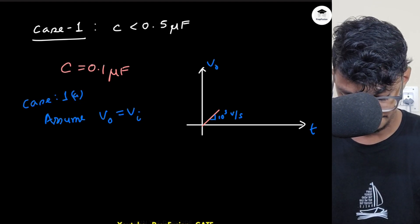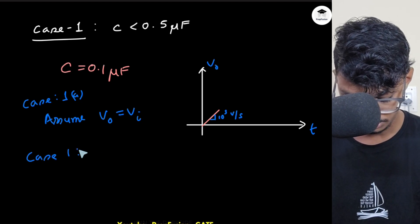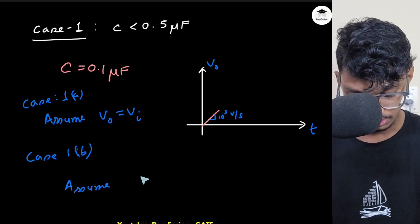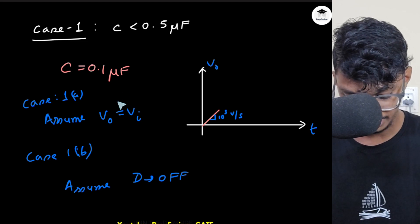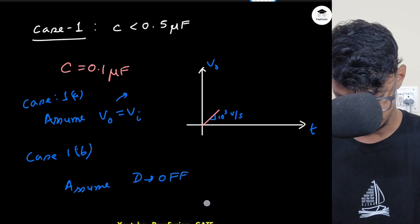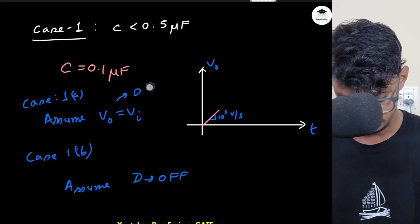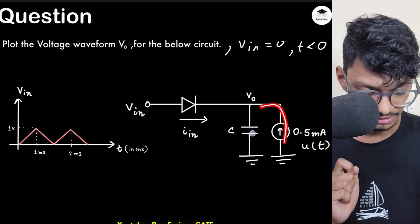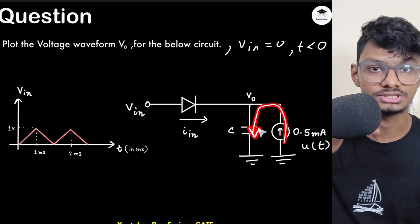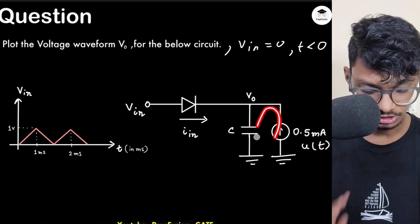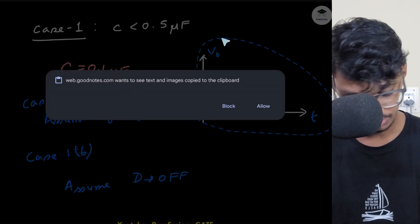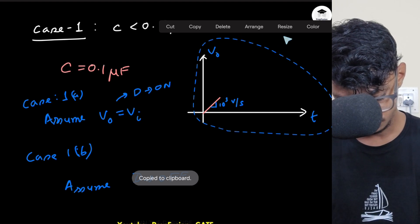Case 1b: I assume the diode is off. If the diode is off, the current source is connected directly across the capacitor. The voltage across the capacitor will linearly increase — V_O node will only go up and up. So V_O will also be a straight line.